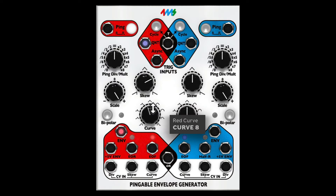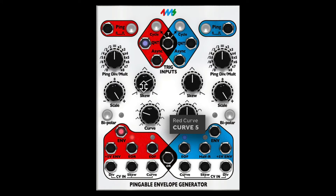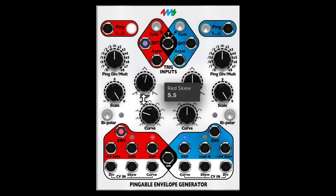I like this curve option. A normal triangular shape can be curved further for interesting results. On the left we have a few more shapes — this parameter is stepped, unlike the skew where you have a continuous control.